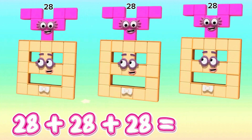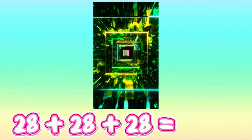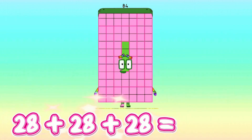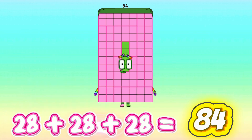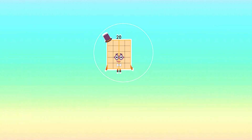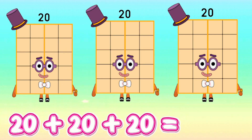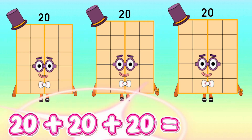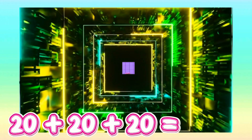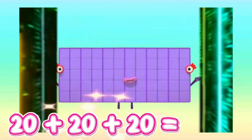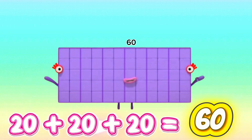28 plus 28 plus 28 is equals to 84. 20 plus 20 plus 20 is equals to 60.